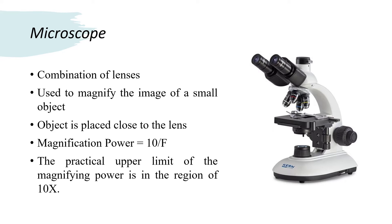Magnification of a single lens is determined by the equation M equals 10 divided by F, where F is the focal length of the lens. The constant 10 represents the average minimum distance at which objects can be distinctly seen by the naked eye. Using this equation, a lens with a focal length of 5 inches has a magnification of 2, said to be a 2-power lens.